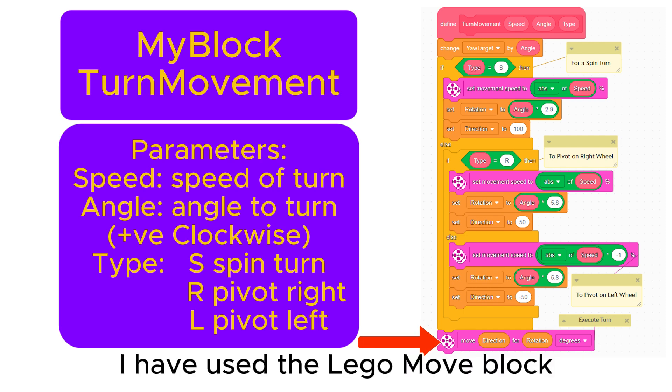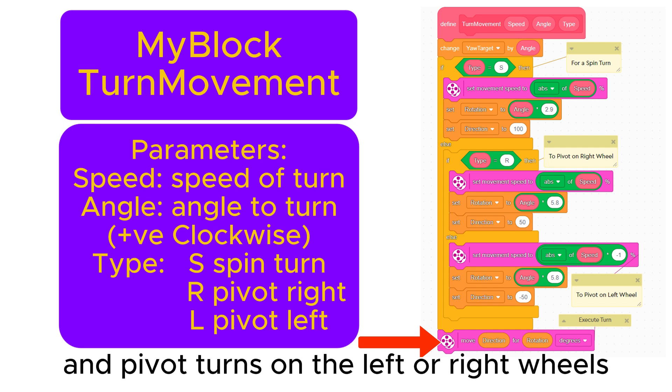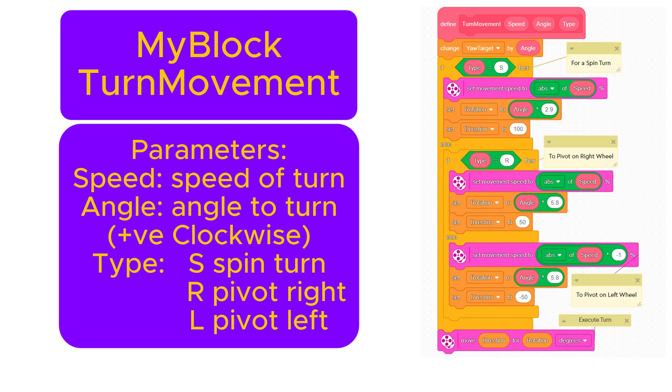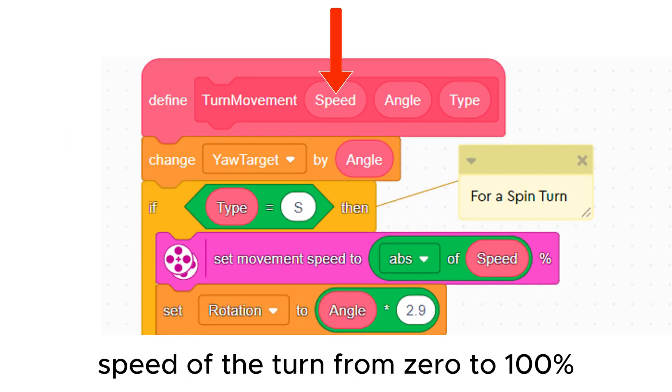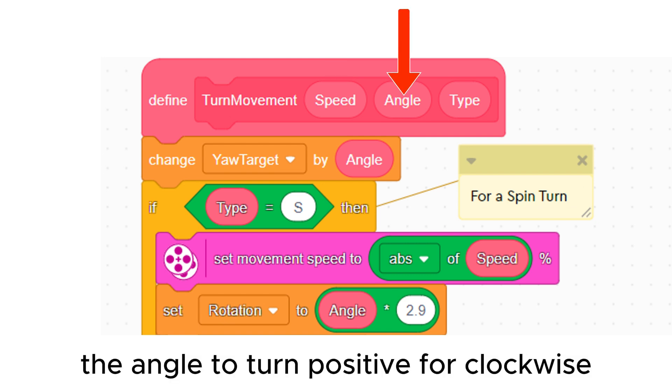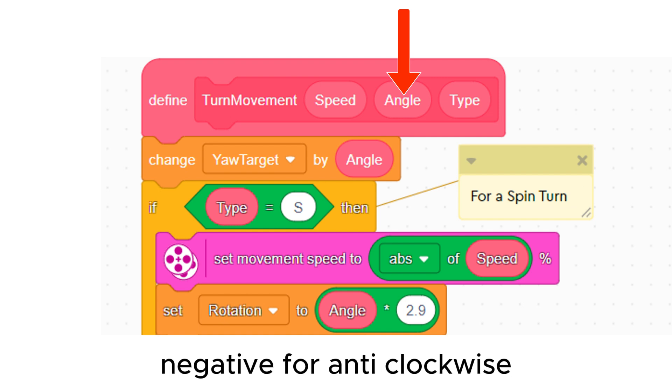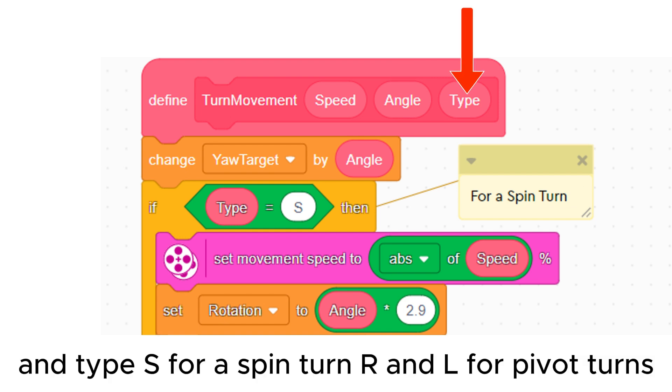I have used the Lego move block to implement spin turns and pivot turns on the left or right wheels. Three parameters are used: speed of the turn from 0 to 100%, the angle to turn positive for clockwise, negative for anticlockwise, and type S for a spin turn, R and L for pivot turns.